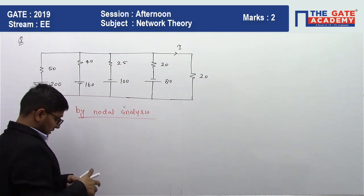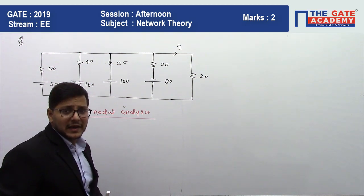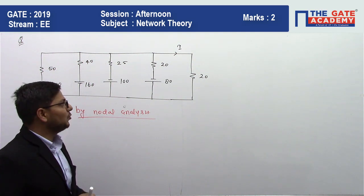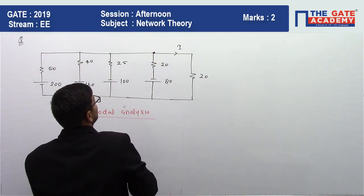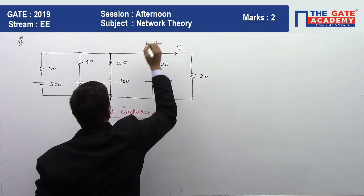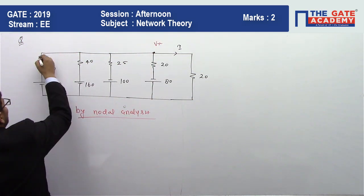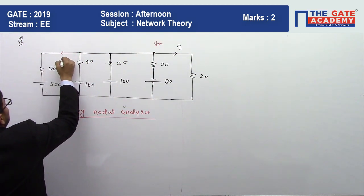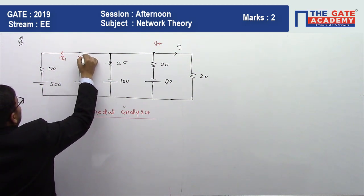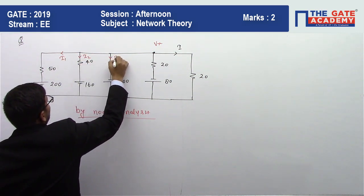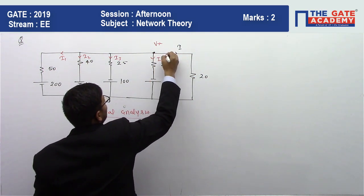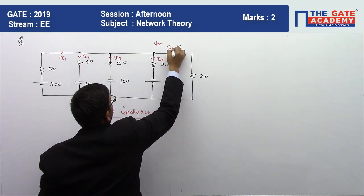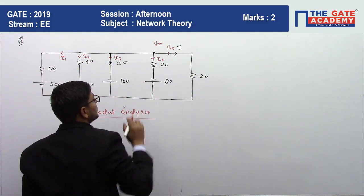Let us assume the nodal voltage - this point voltage is Vx. Suppose this current is I1, this current is I2, this current is I3, this current is I4, and this current is I5. Here I5 is equal to i.